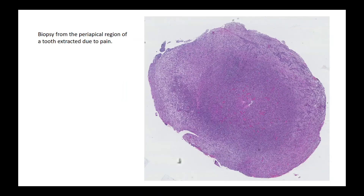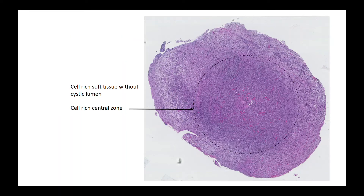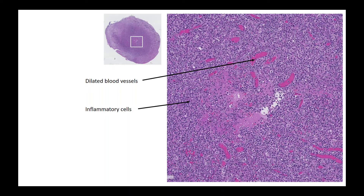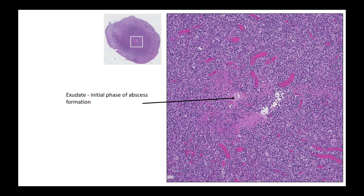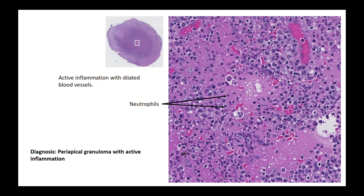Another biopsy from the periapical region, also extracted due to pain. This is solid tissue — no cyst lumen can be seen — with a central zone that is more cell-rich compared to the periphery. The central area is full of inflammatory cells, dilated blood vessels packed with erythrocytes, and a central area with pinkish exudate, which may be the initial phase of abscess formation. Neutrophil granulocytes and scattered erythrocytes confirm active inflammation. The diagnosis is periapical granuloma with active inflammation.